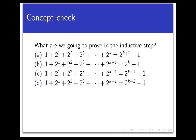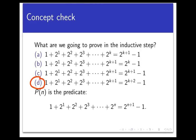Now that we've identified what we're assuming in the inductive step, let's identify what we need to prove. What are we going to prove? The answer is D. We're going to prove that the statement p of k plus 1 is true. If you replace n with k plus 1 in p of n, on the left you end the sum with 2 to the k plus 1, and on the right we have 2 to the k plus 1 plus 1, which equals 2 to the k plus 2.